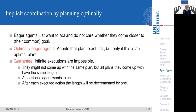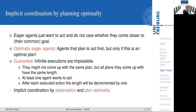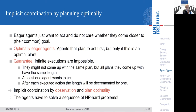So that's the way to go. What we have shown is that it is possible to be successful when you have an implicitly coordinated multi-agent pathfinding problem — when you have full observation and when you can plan optimally. The only problem is that in order to do that, the agents have to solve a sequence of NP-hard problems. That's not so nice because every time we have to replan, we have to come up with another optimal plan, which is an NP-hard problem.